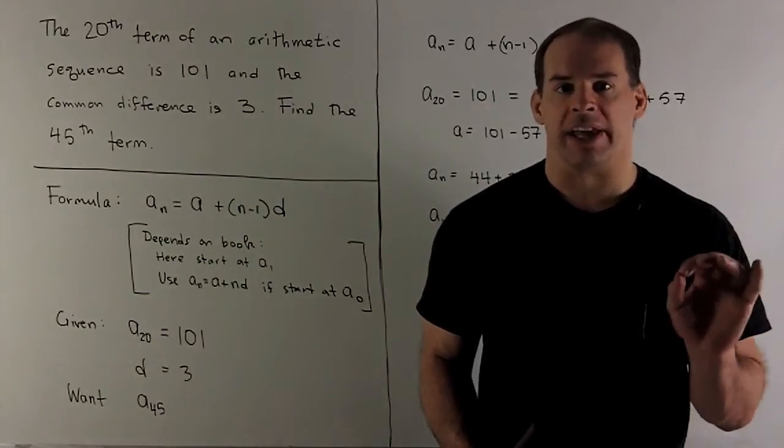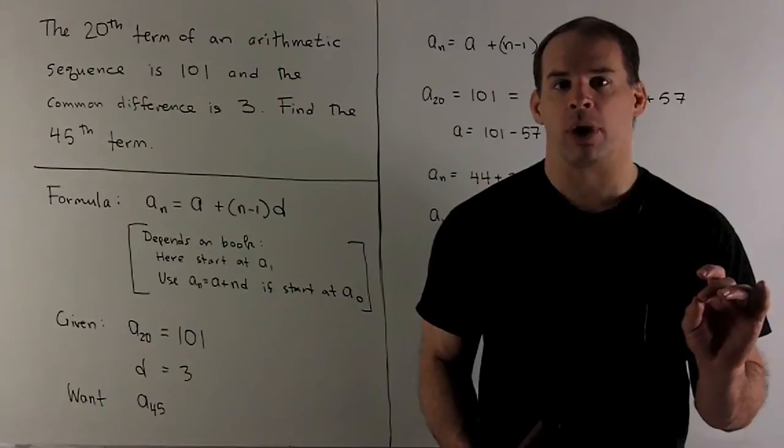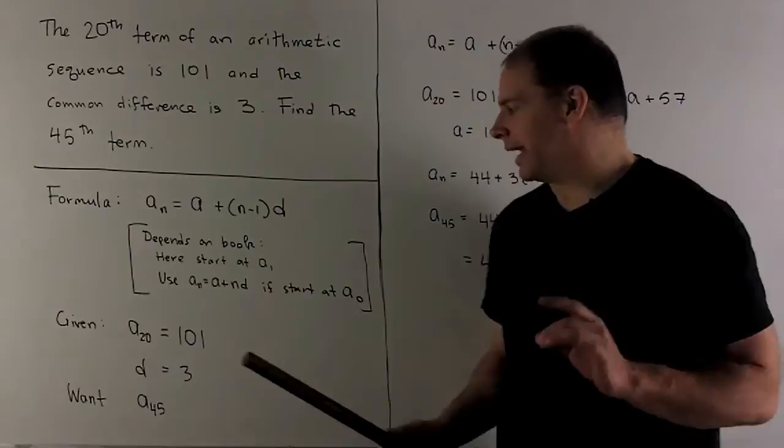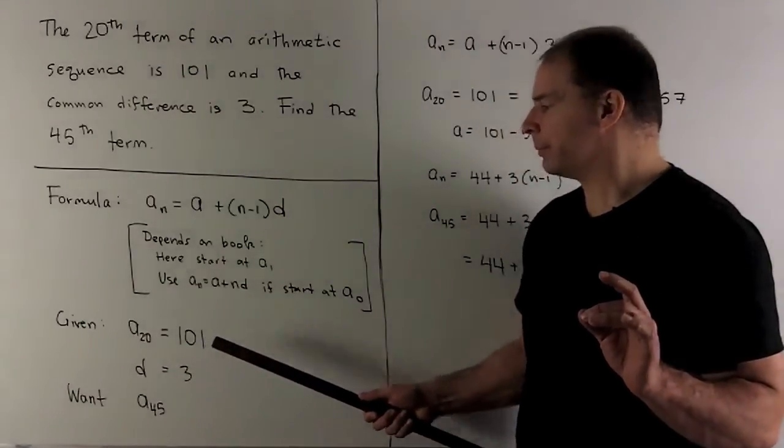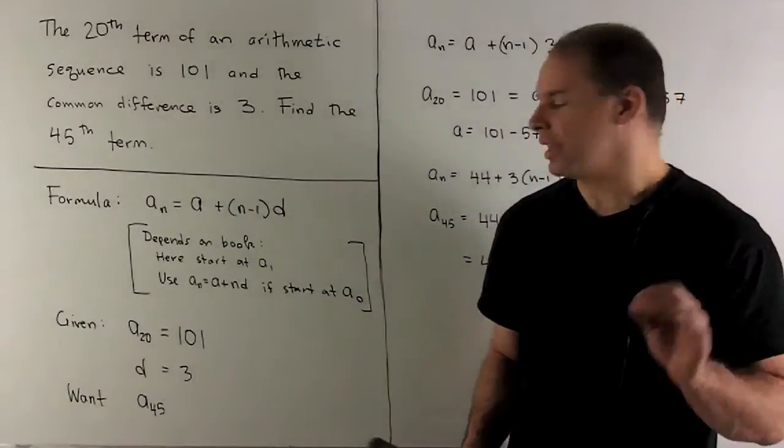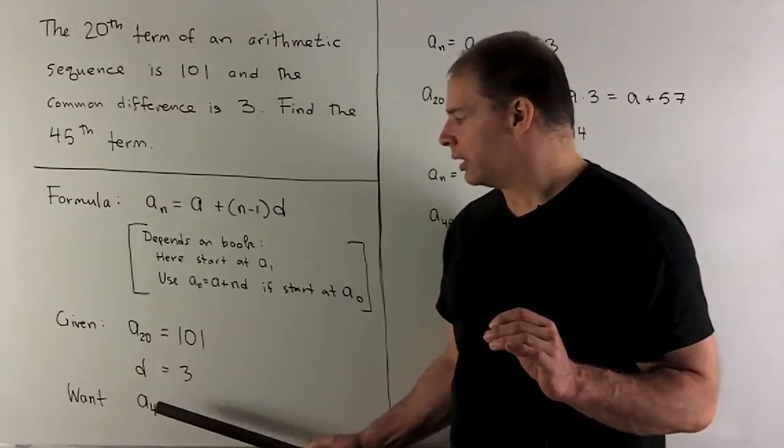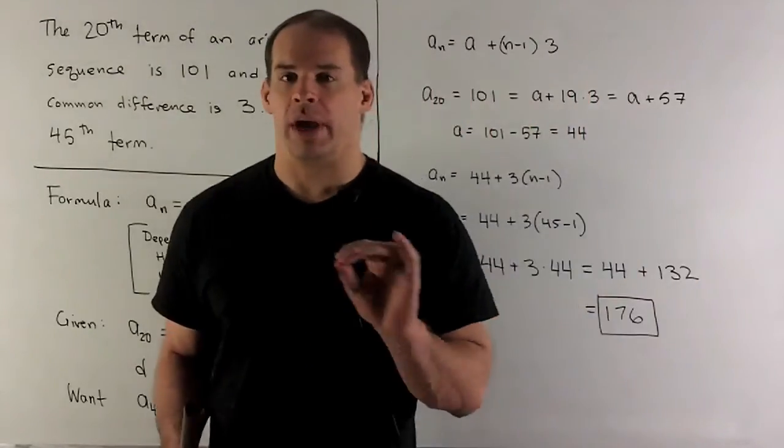let's take all of our data, write it into equation form, and then see if we can solve our problem. Now I'm given that a_20 is 101, a common difference d is given by 3. I want a_45, so we're going to write down the equation.